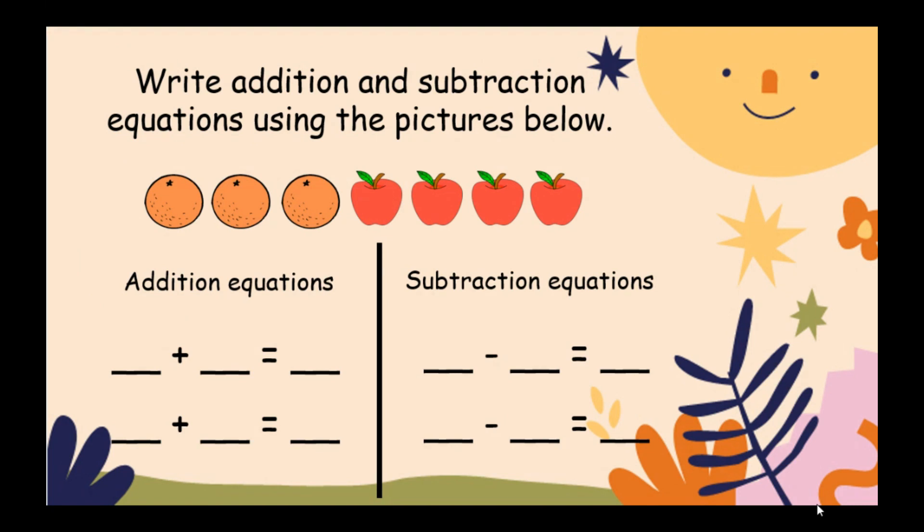Let's write addition and subtraction equations using the pictures below. Let's start with addition equations. How many oranges can you see? Three. How many apples? Four. So three plus four equals seven. Or start from the number of apples: four plus three equals seven. So we made two addition equations using the pictures.